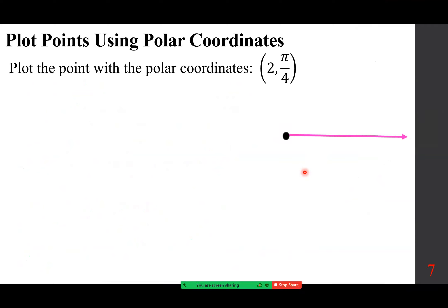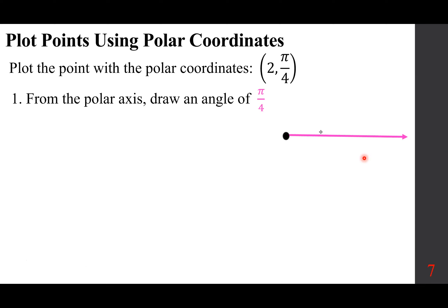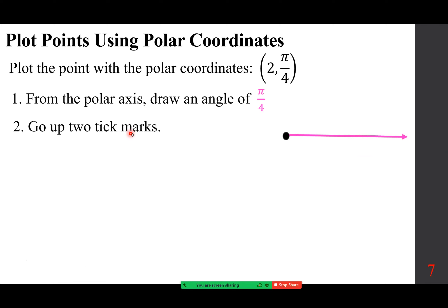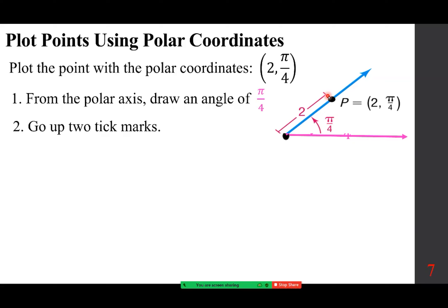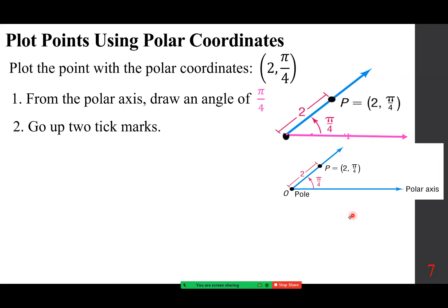For example, we want to plot (2, π/4). Here's your polar axis. From the polar axis we draw the angle π/4 in a positive direction, and then we go out 2 tick marks. So it's (2, π/4). That's the final graph.